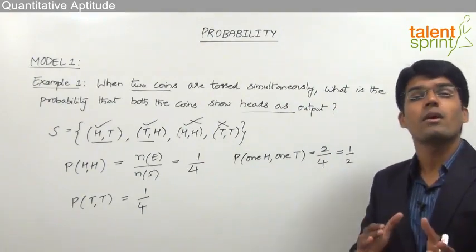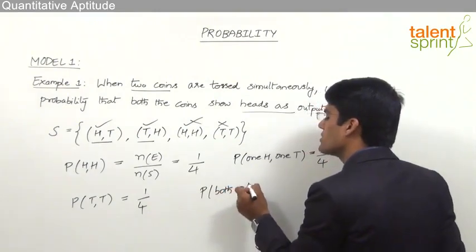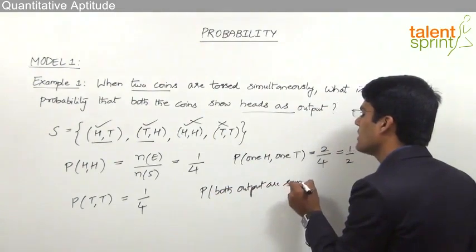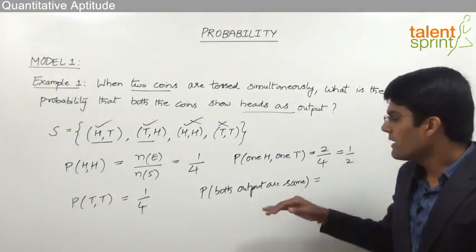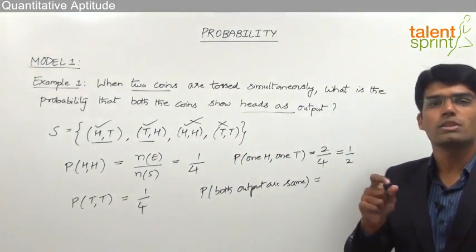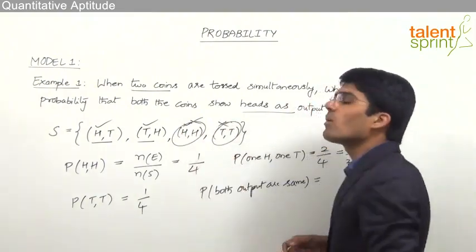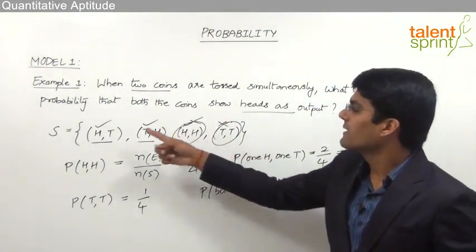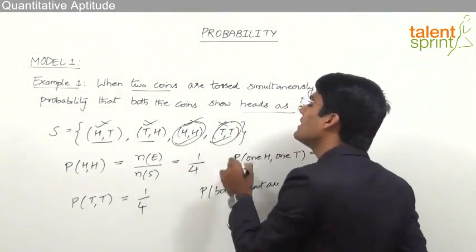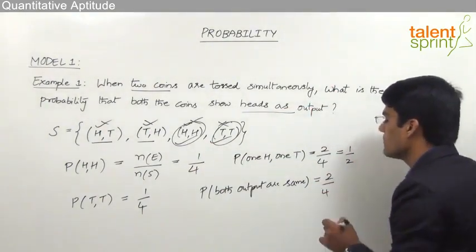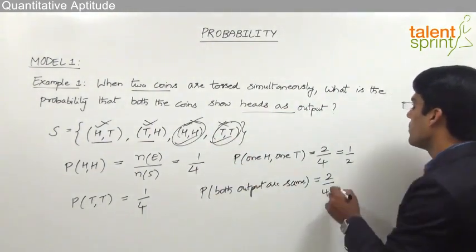What is the probability that both coins show the same output? Both outputs being the same means either both coins show heads or both show tails. Out of the four outcomes, there are two cases where both coins show the same output — both heads or both tails. The first two outcomes (head-tail and tail-head) are not favorable here. So the answer is 2 out of 4, which is again 1/2.